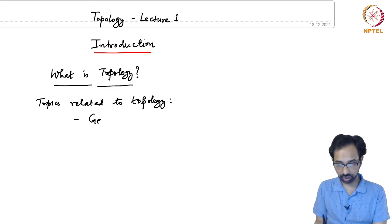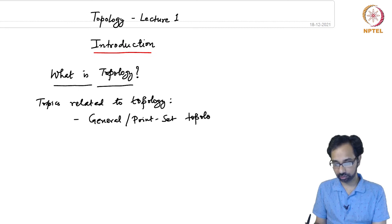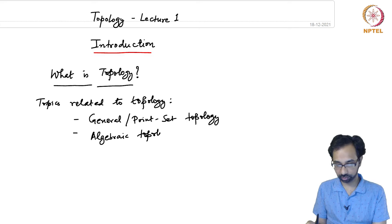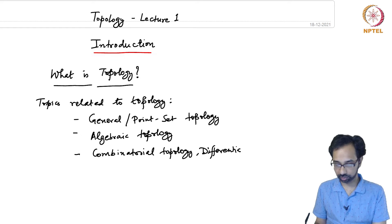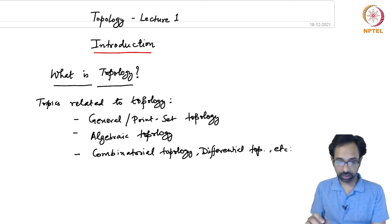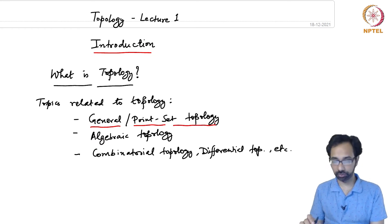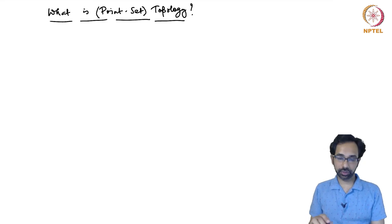The first one is what's called general topology or point set topology. Then there is also algebraic topology, and then there are others such as combinatorial topology, differential topology, etc. But in this course we will only be concerned with the first one, which is general or point set topology. So this course is about point set topology.